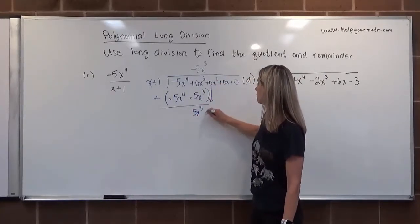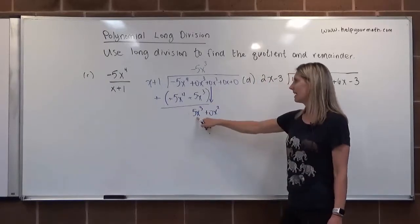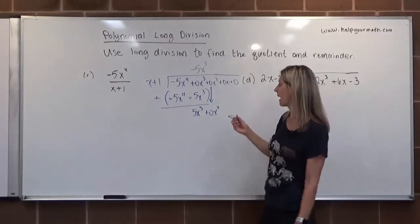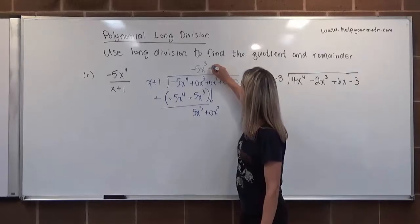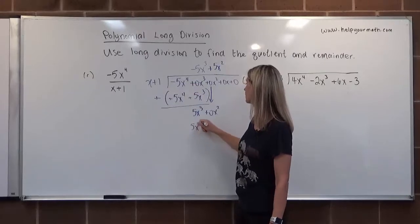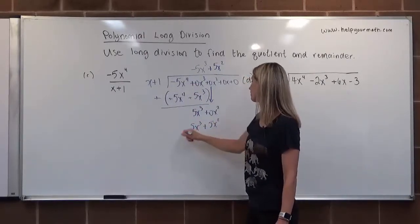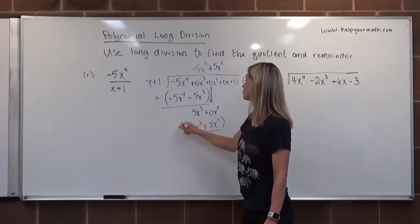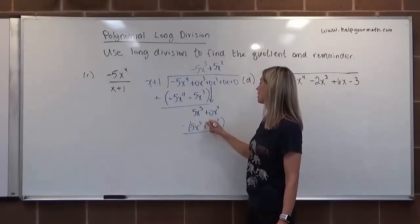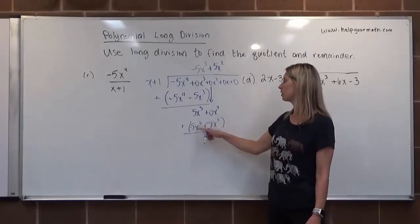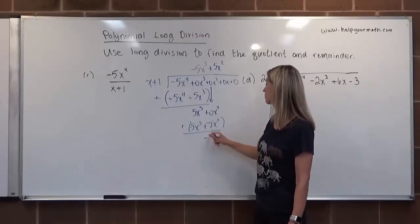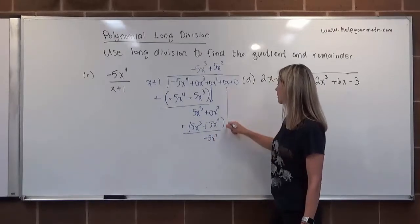We divide 5x³ by x to get 5x². So plus 5x². We multiply 5x² by the divisor to get 5x³+5x², subtract by changing signs, and 5x³ and -5x³ cancel. Then 0x²-5x² gives -5x². We bring down the next term, 0x.